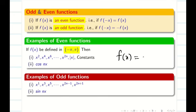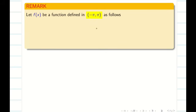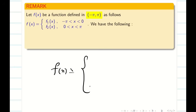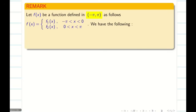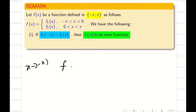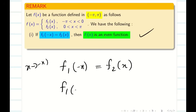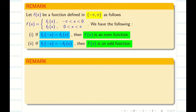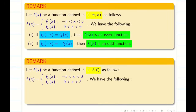When the function is split over a particular interval, for example under minus pi to pi it is split into f1 of x and f2 of x, we check: replace x by minus x in f1. If f1 of minus x gives f2 of x, the function is even. If f1 of minus x gives minus f2 of x, the function is odd. This applies to any general interval minus l to l.